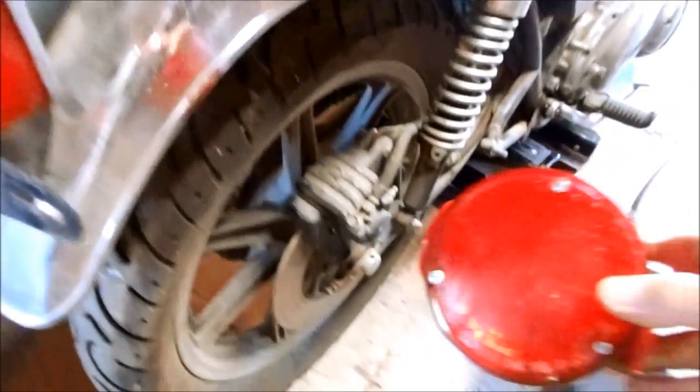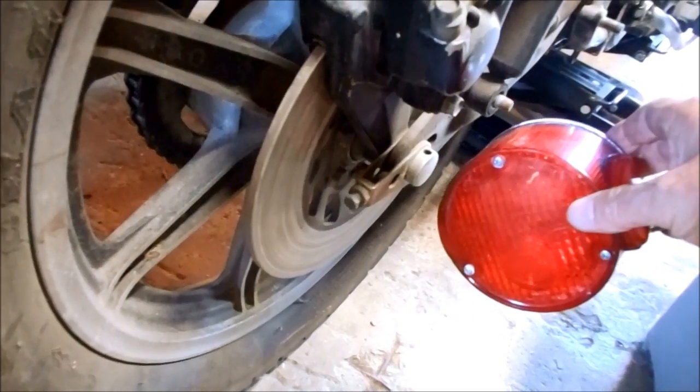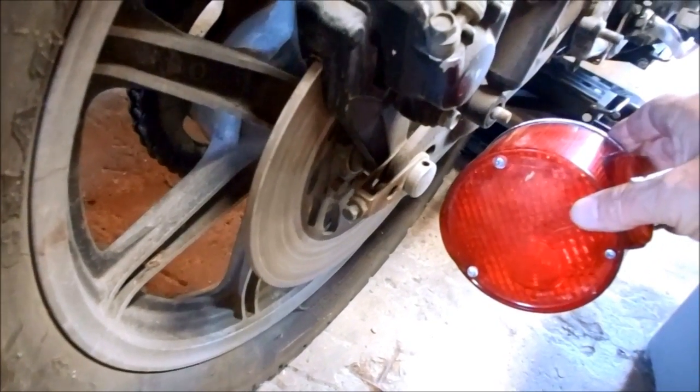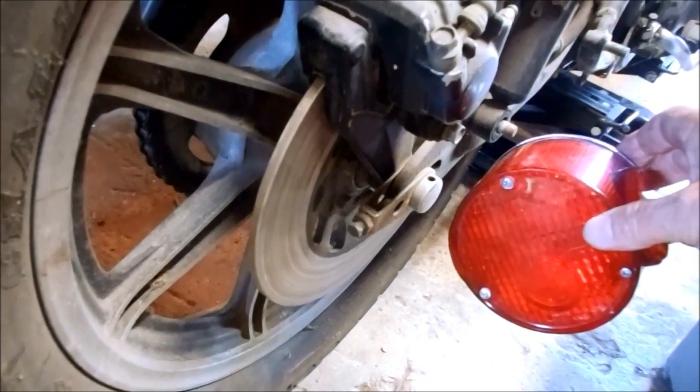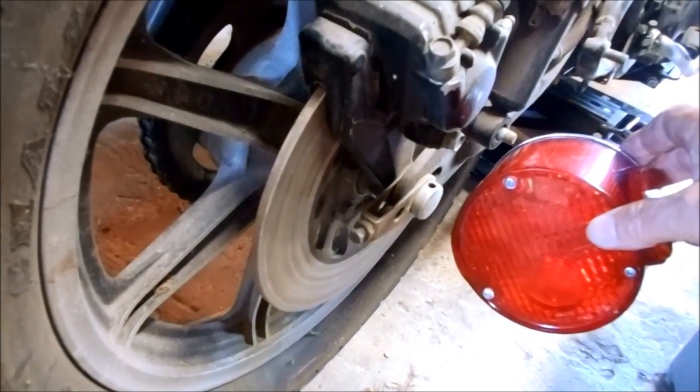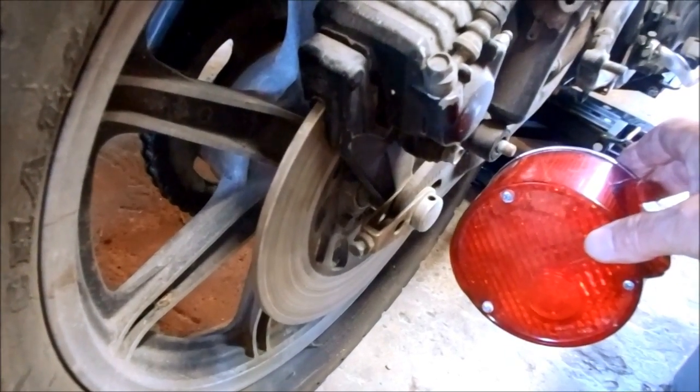Then we're going to take this small round tail light and mount it right down here by the rear brake. We're going to fabricate a bracket and also install the license plate so everything is one complete unit. Nice and clean look back here, and we'll get some tools out and start fabricating.